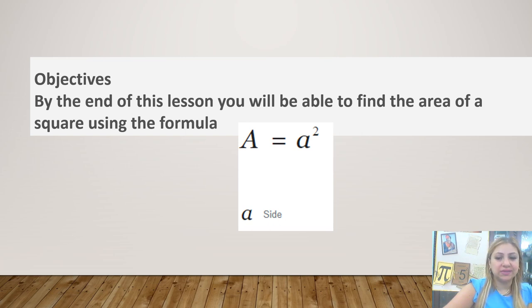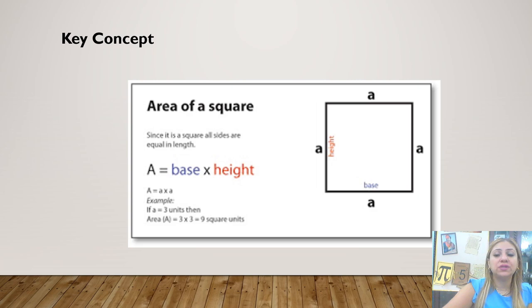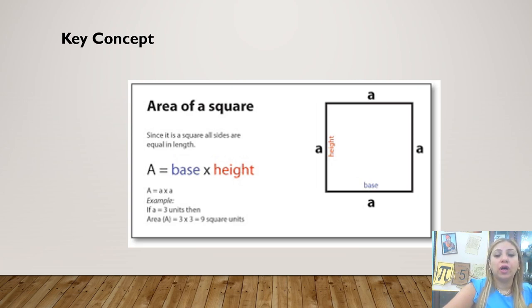A represents the side. This is our key concept. As you see, this is a square and it has four sides that are equal to each other. I'm going to represent each side by the variable a. And to find the area, I'm going to multiply base by height, which is a times a — that is a squared.